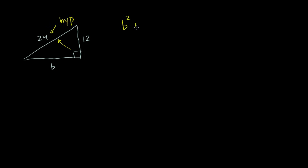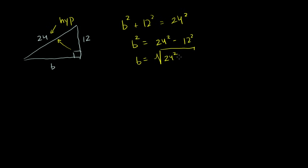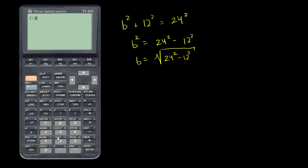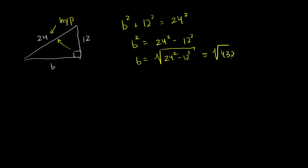By the Pythagorean Theorem: B squared plus 12 squared equals 24 squared. We subtract 12 squared — which is 144 — from both sides: B squared equals 24 squared minus 12 squared. 24 squared minus 12 squared equals 432. So B equals the square root of 432.